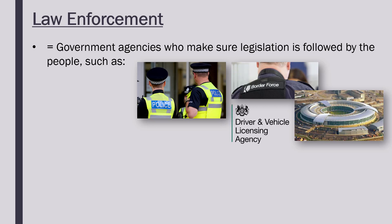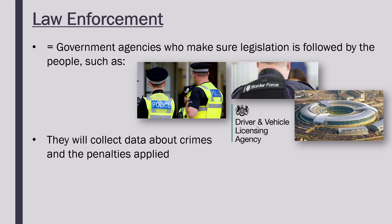Other agencies include the DVLA — the Driver and Vehicle Licensing Agency — who are in charge of making sure all vehicles and drivers are licensed properly. These agencies all use data in lots of ways, collecting data about incidents they're dealing with — for the most part crimes, especially if you are the police. So what crimes occurred, when they occurred — that is all data being collected. They also care about the effect: what penalty was applied, was it a fine, was it a jail sentence, and what happened to individuals.